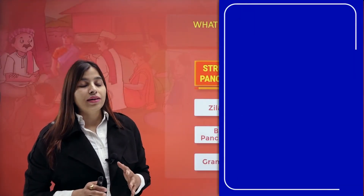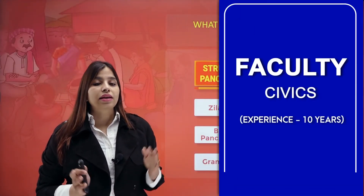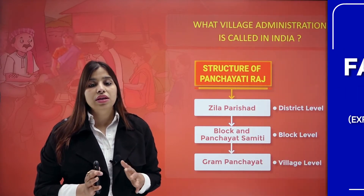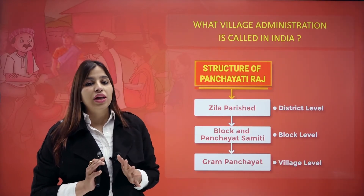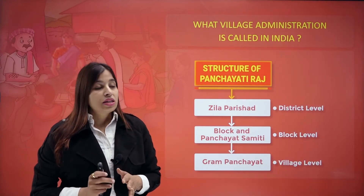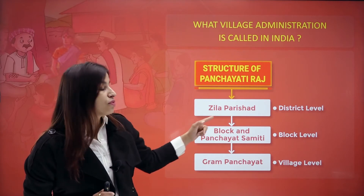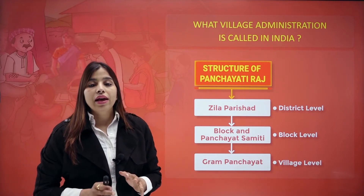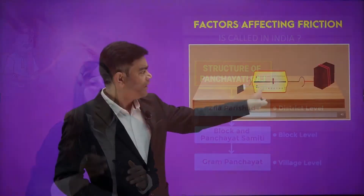This is a flowchart that clearly explains how this structure functions. On the top there is Jala Parishat. Jala Parishat basically works at the district level. Then there are the block levels and the panchayat samiti.